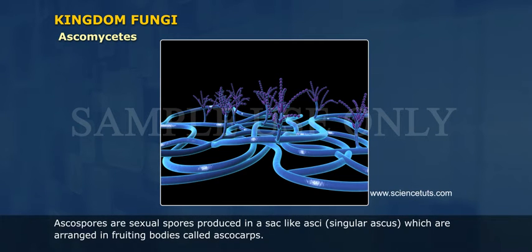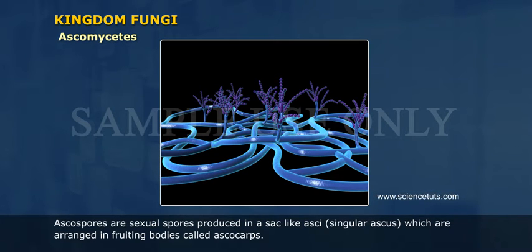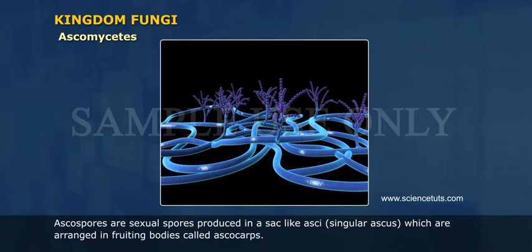Ascospores are sexual spores produced in a sac-like ascus (singular: ascus), which are arranged in fruiting bodies called ascocarps.